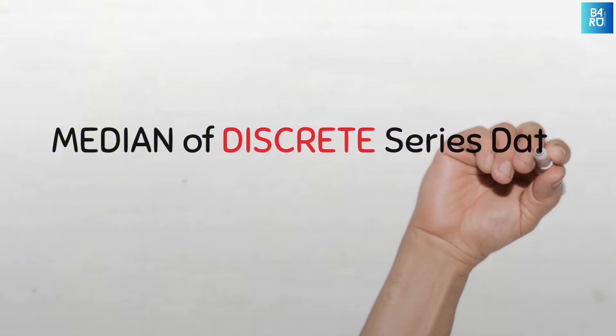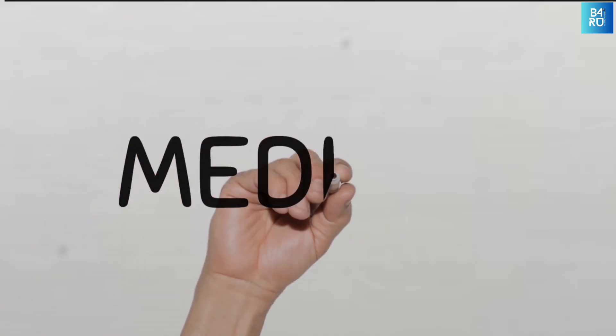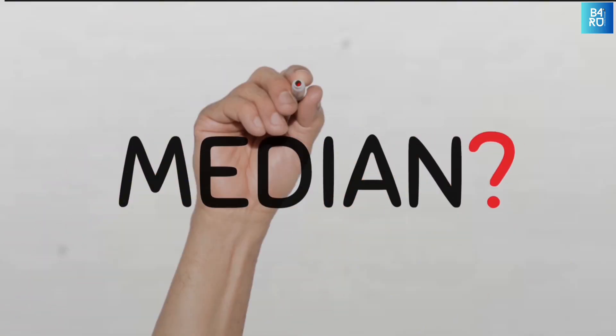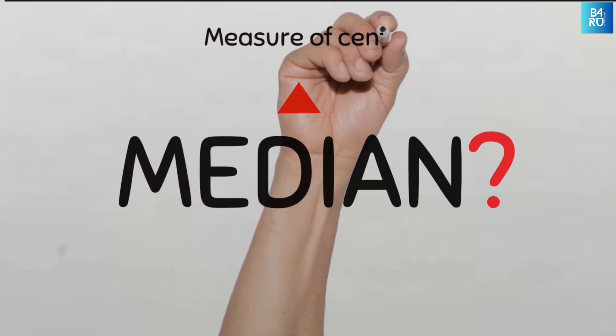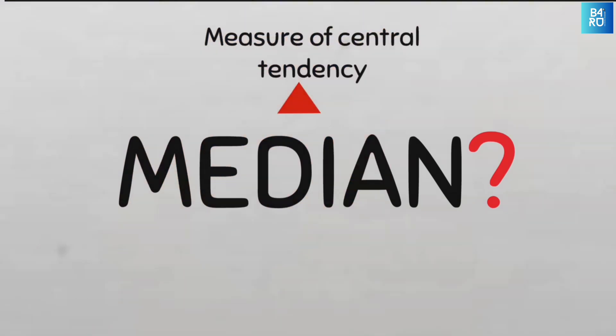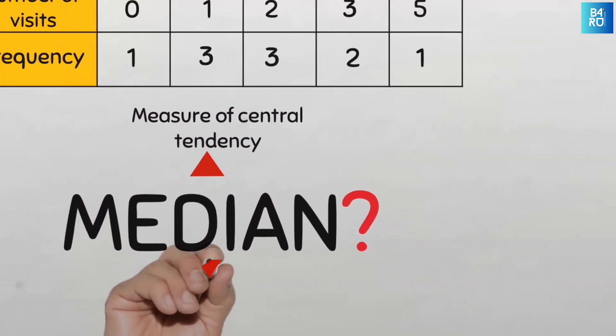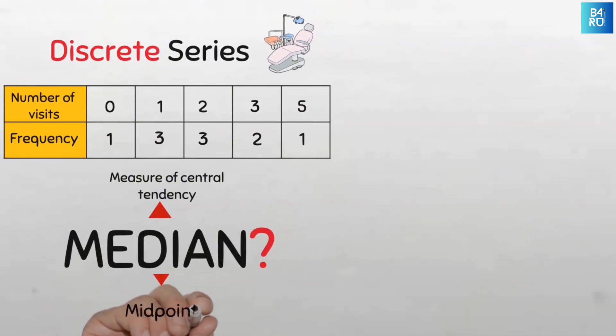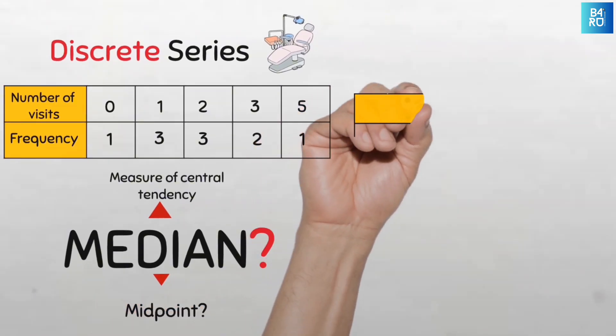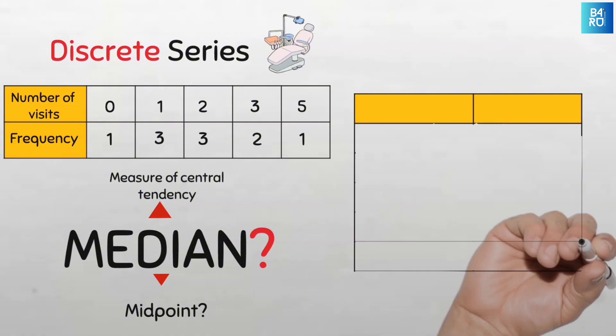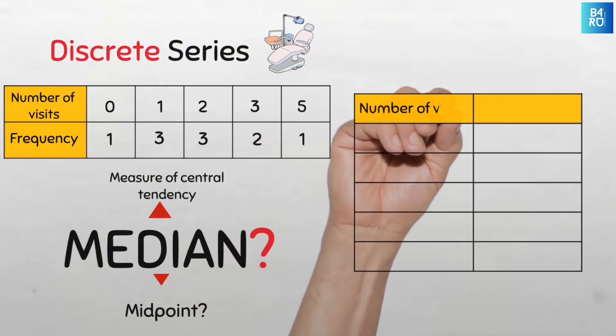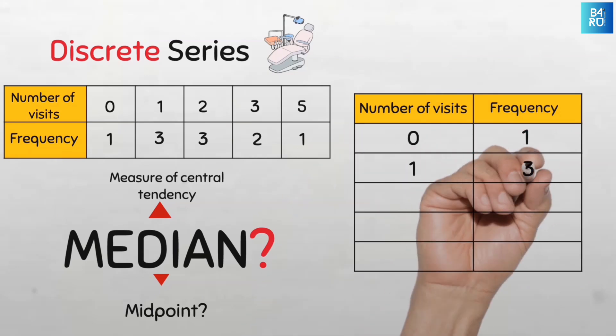The median of discrete series data. How do we find the median of this data? Recall that the median is a measure of central tendency that indicates the middle point of the data set. So our task here is to find the middle point or the middle value of the data set. Let's first modify this table a bit to make it easy for us to compute. So we'll put the number of visits here and then the frequency here and then we can put in all the data arranged neatly in a vertical manner.